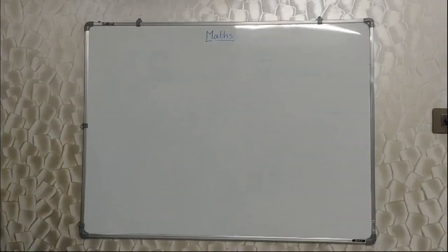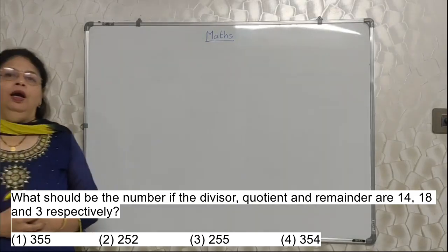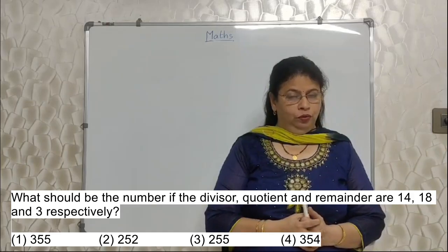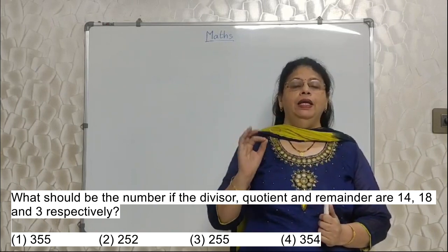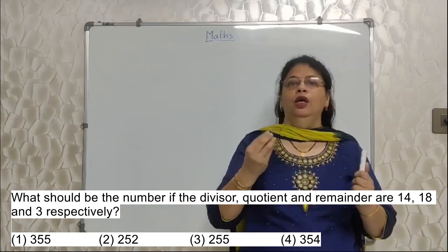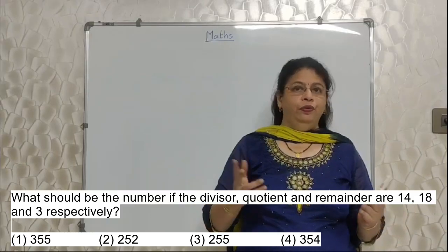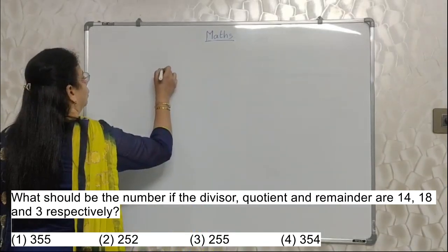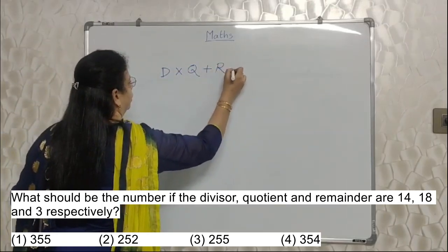What should be the number if the divisor, quotient and remainder are 14, 18 and 3 respectively? I have purposely taken this sum because this formula many students do not know. They don't know. So I want you to know this formula. This is simply based on formula. But in case you don't know that formula, 2 marks are unnecessarily wasted. So we cannot afford it. So what is the formula?